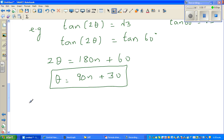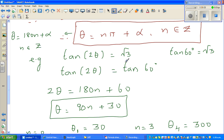So I can say if n is 0, θ₁, if you put 0, that is 30. If n is 1, θ₂ is 90 times 1 is 90 plus 30 is 120. If n is 2, θ₃ is 90 times 2 is 180 plus 30 is 210. We'll go up to 360. When n is 3, θ₄ would be 90 times 3 is 270 plus 30 is 300. So from 0 to 360, you have 4 solutions. Then tan 2θ is √3.